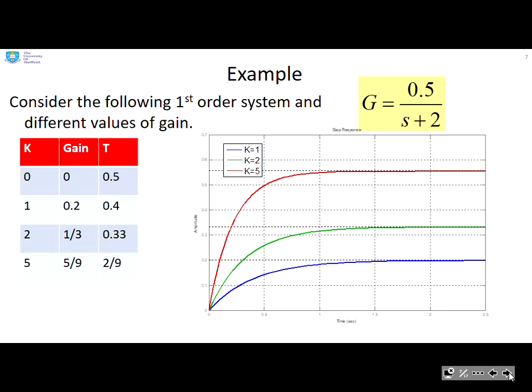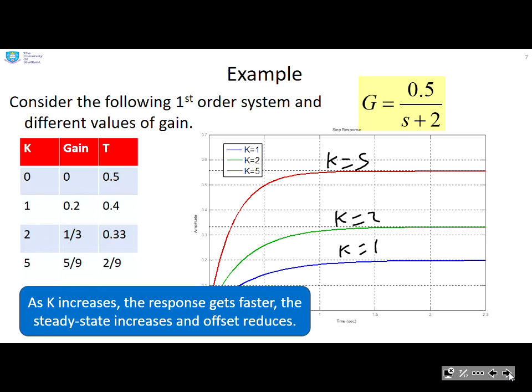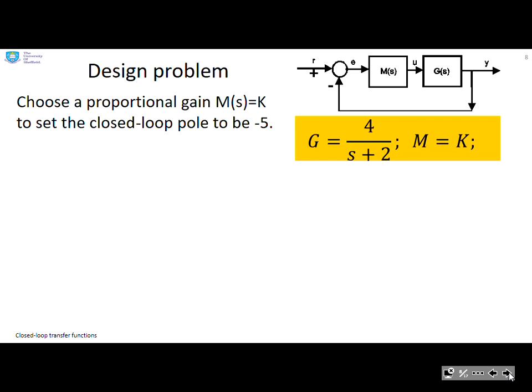These graphs show what we've just demonstrated. I'm increasing K from K equals 1 to K equals 2 to K equals 5. As K increases, I get faster, my offset reduces, my gain increases. But the offset is still very large for all cases. The key thing is increasing K, I get faster and my offset reduces, but the offset is large in all cases.